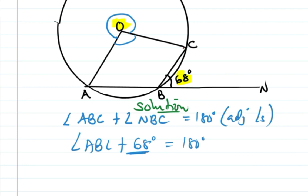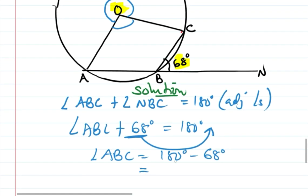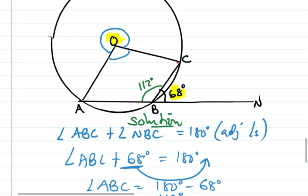Combining like terms, angle ABC is equal to 180 degrees minus 68 degrees, which gives us 112 degrees. So this angle here is 112 degrees.